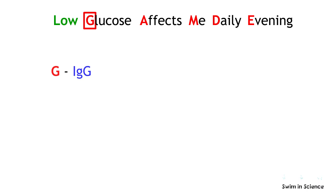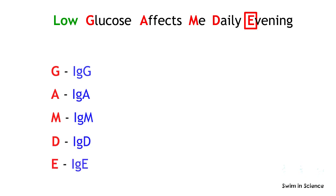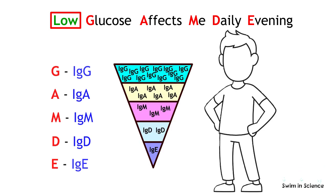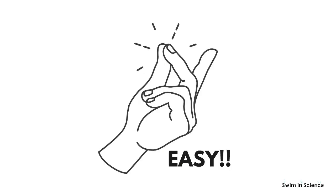Here, G stands for IgG, A stands for IgA, M stands for IgM, D stands for IgD, and E stands for IgE. The first word "low," shown in green, represents the descending order of each antibody's abundance in the body serum — that is, IgG is the most abundant, and IgE is the least antibody in the serum. Easy, right?